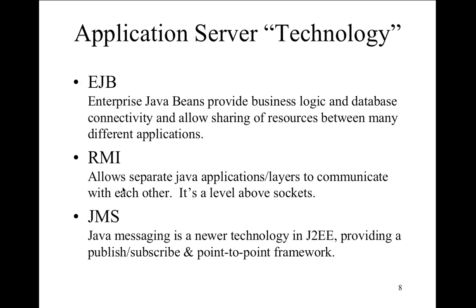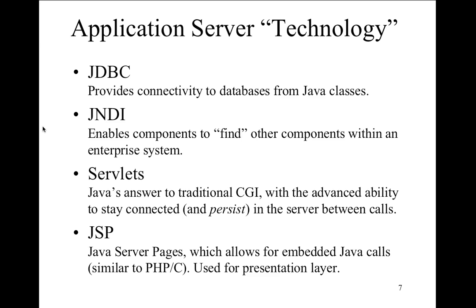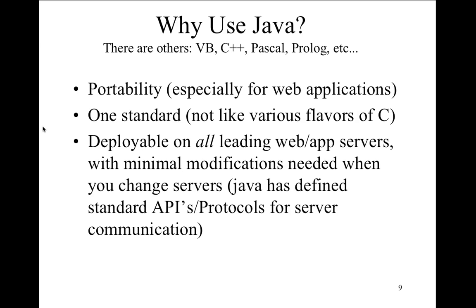JMS — Java Messaging Service — is one of the newer technologies of J2EE, providing a publish-subscribe and point-to-point framework communication. It's a messaging system, a message-response type system. Those last two slides represent the technologies we'll be hitting one by one over the next 15 weeks — that's the theme of this course. If you're wondering what we're going to cover, those two slides are it.